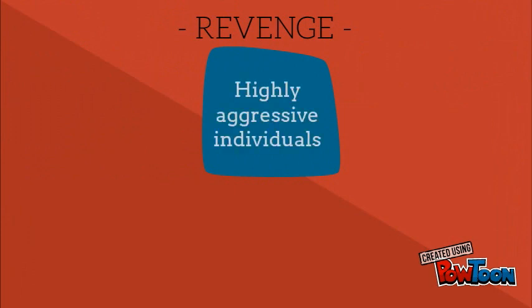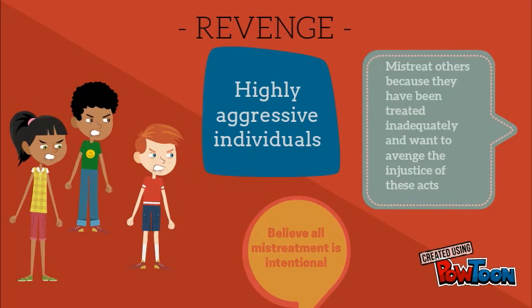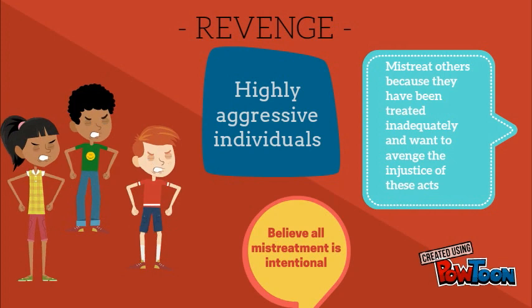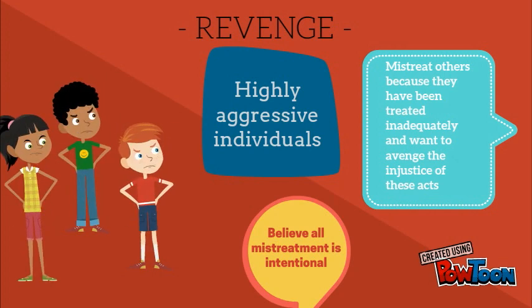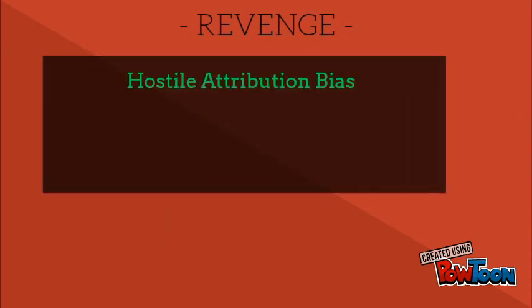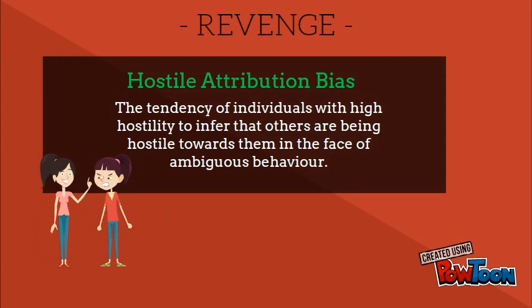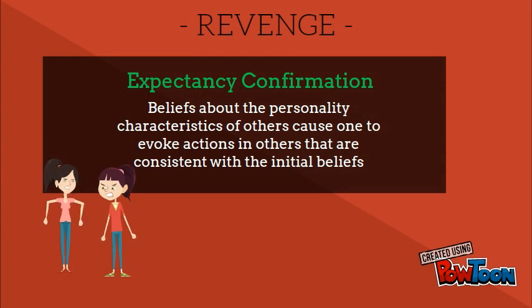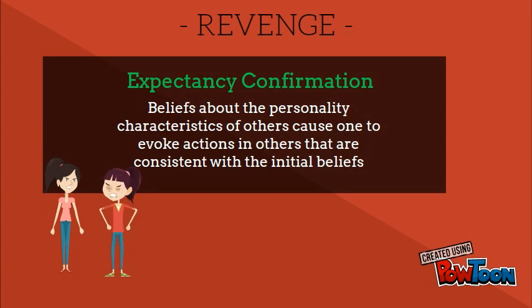For revenge, a student will believe that all mistreatment is intentional, resulting in the false assumption that others do not like them. These students can be highly aggressive, and they may mistreat others because they have been treated inadequately and want to avenge their injustice. The hostility attribution bias is the tendency of individuals with high hostility to infer that others are being hostile towards them in the face of ambiguous behavior, while expectancy confirmation is when beliefs about the personality characteristics of others cause one to evoke actions in others consistent with the initial belief.